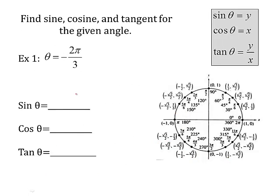Let's try this. This one says find sine, cosine, tangent for negative 2π over 3. So I'm going to look for positive 2π over 3, which is right here. I'm going to fold it along the x-axis. Where does it land? It lands right here at positive 4π over 3. So that's the same as positive 4π over 3. So I'm going to use this coordinate pair down here to answer my questions.